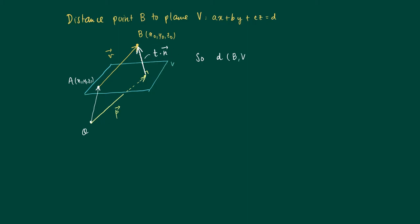So the distance of B to V is no more than the length of this vector T, and what we need to do is to calculate this vector T.